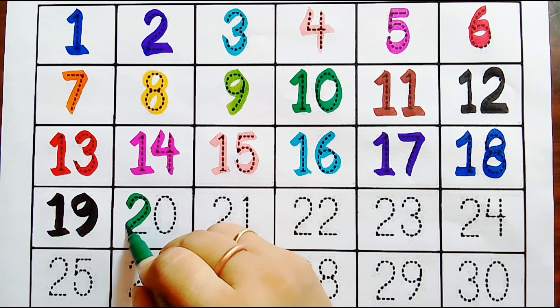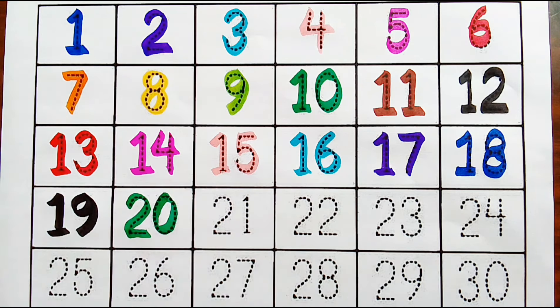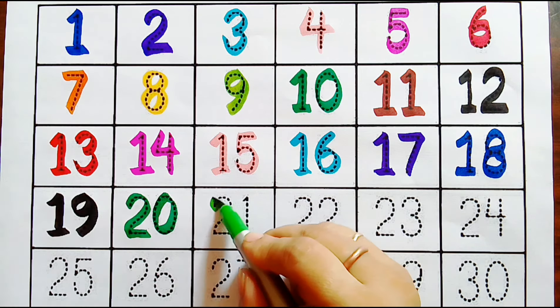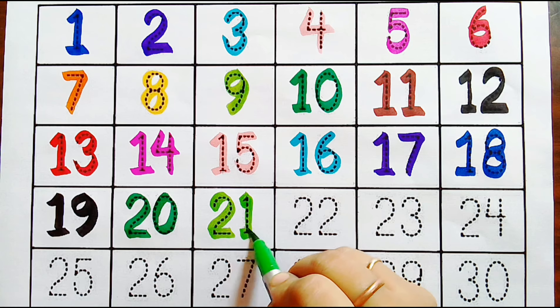Dark green color, two, zero, twenty. Green color, two, one, twenty-one.